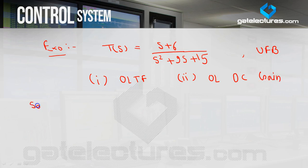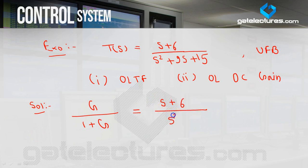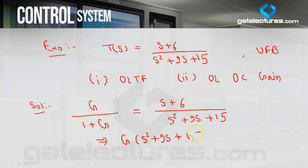For the solution: since we have a closed loop system with unity negative feedback, the transfer function given is G/(1+G) with H=1. So I compare (S+6)/(S²+9S+15) with G/(1+G), and cross-multiply to get: G·(S²+9S+15) = (1+G)·(S+6).